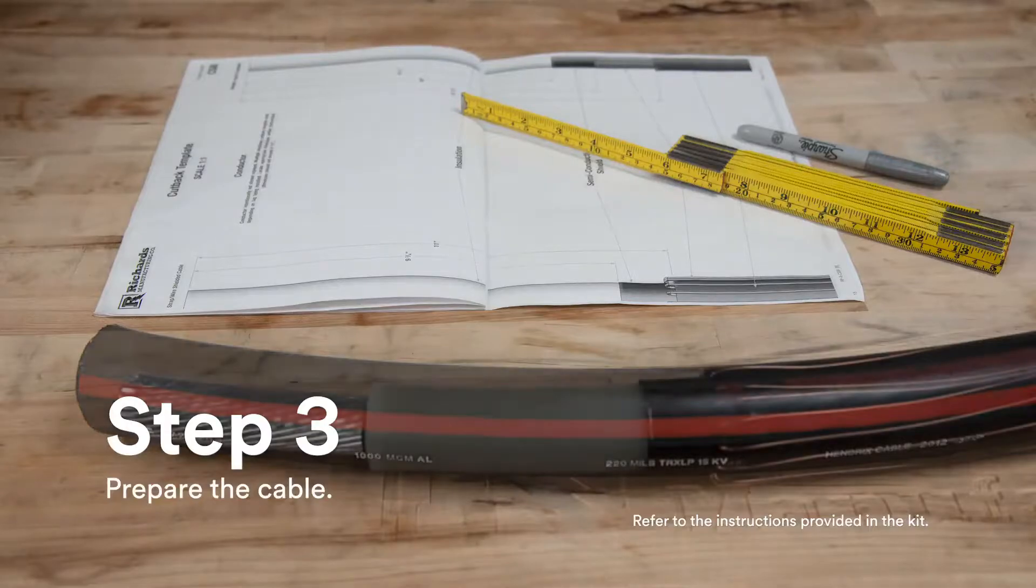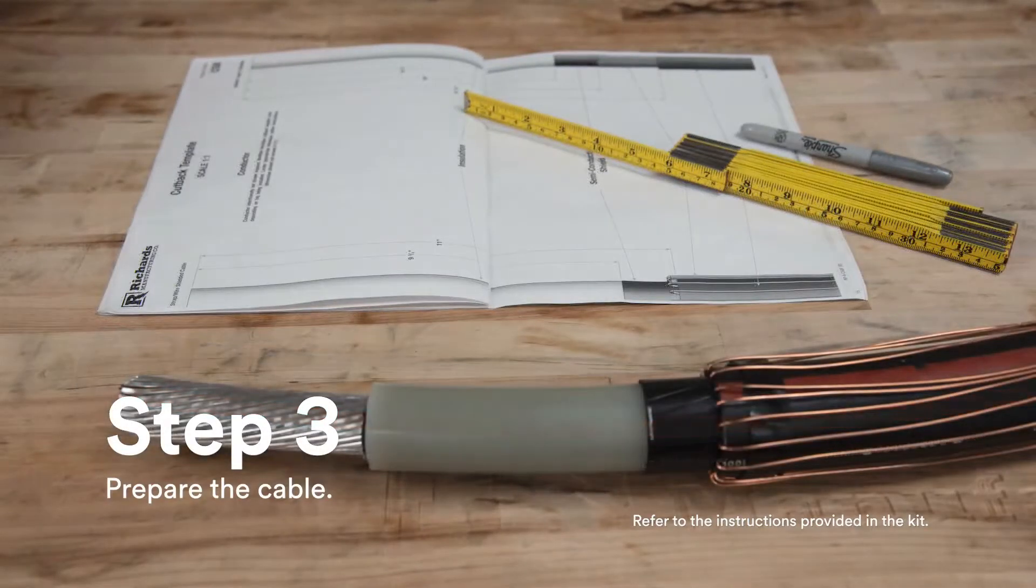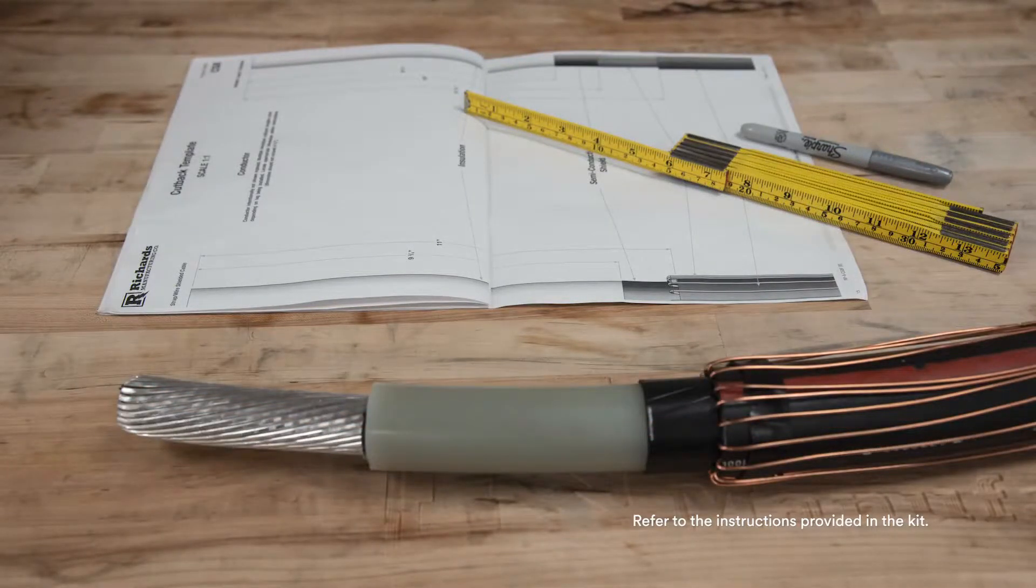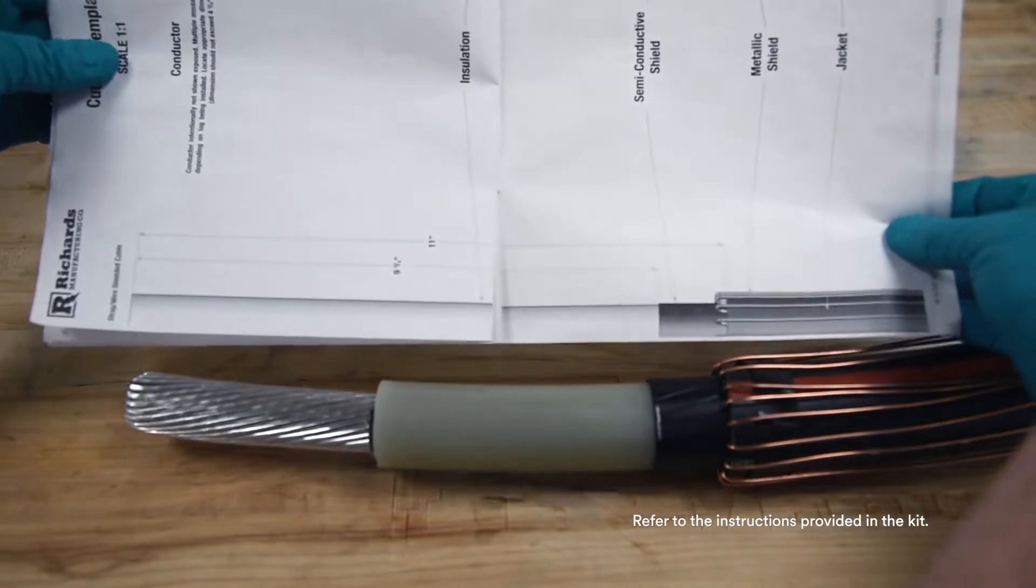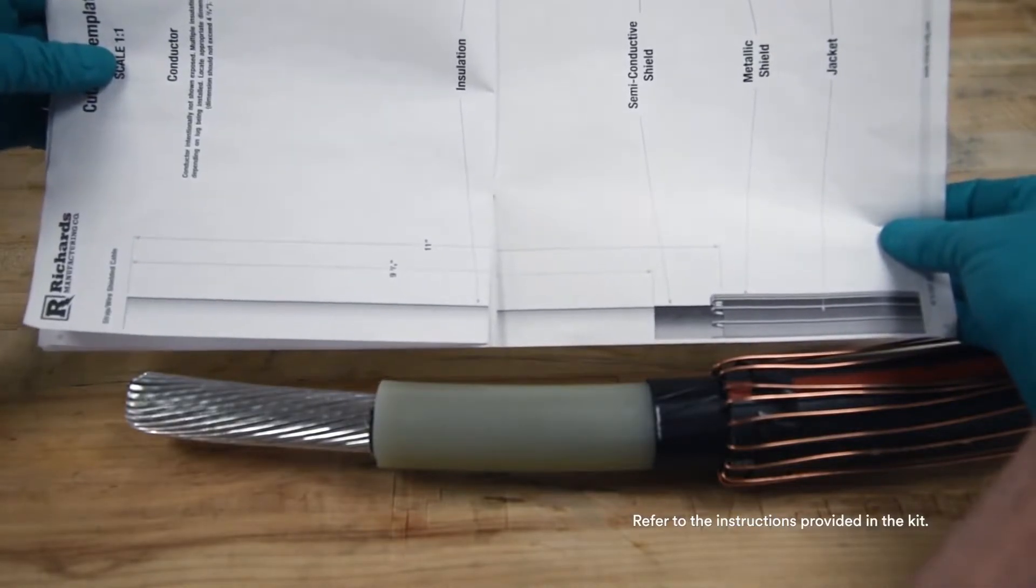Prepare the cable according to approved techniques following the cutback dimensions and requirements detailed in the instructions. Check dimensions carefully before proceeding. A two scale cutback template is included in the instruction sheet booklet.